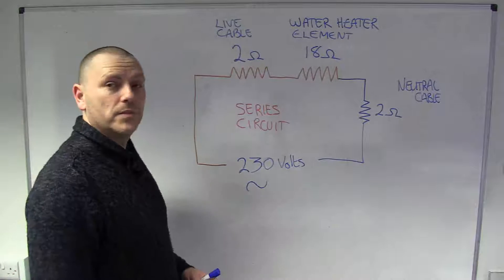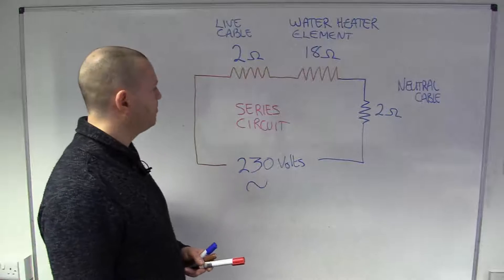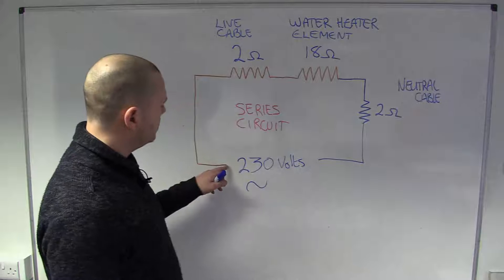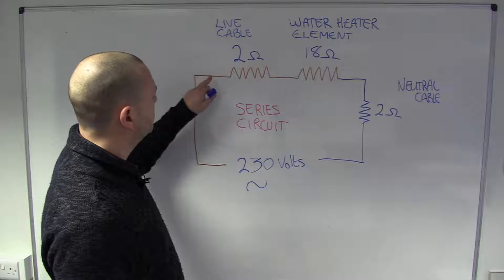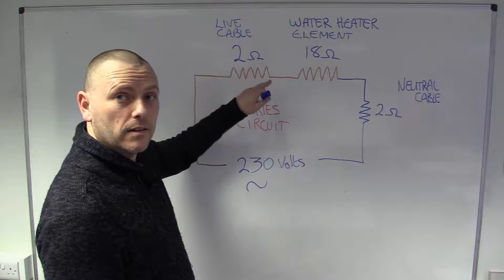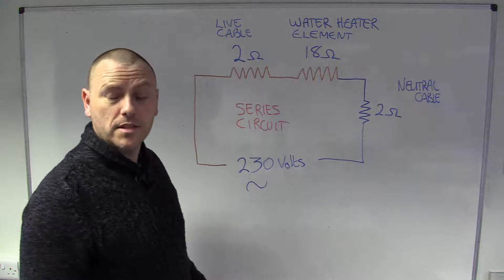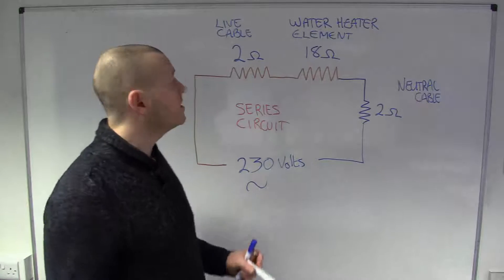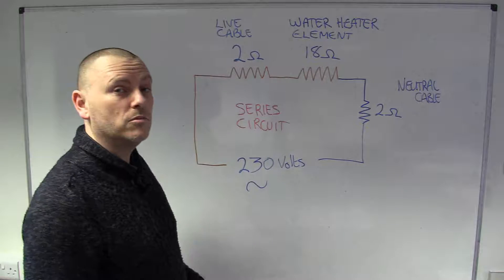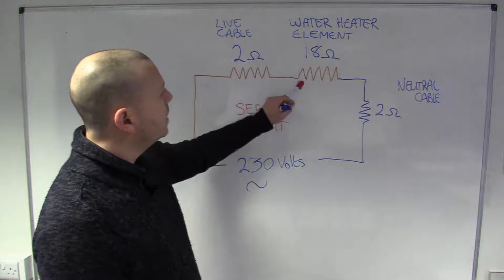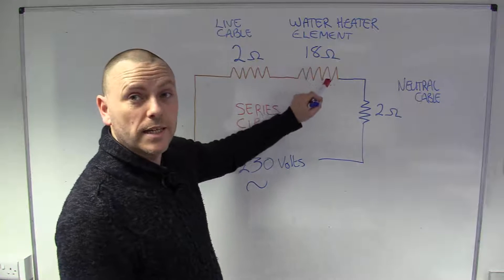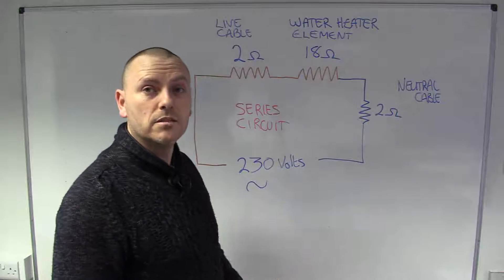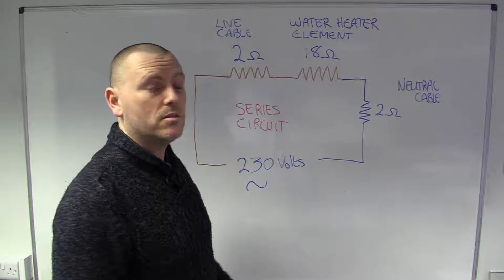So, this is our circuit. Our supply is coming from here, this is our live part if you like, and then it's got this squiggly line, and that squiggly line represents a resistance of some sort. It could be anything, in this case I've said it's the live cable. Then it goes to another squiggly line, which in this case I've labeled the water heater element, but again, it could represent any resistance at all.